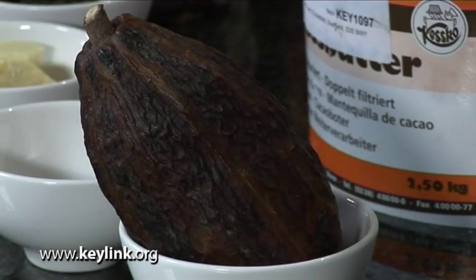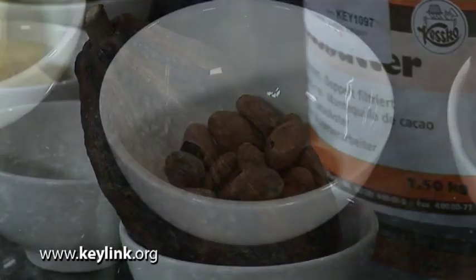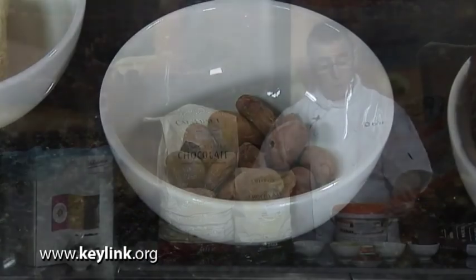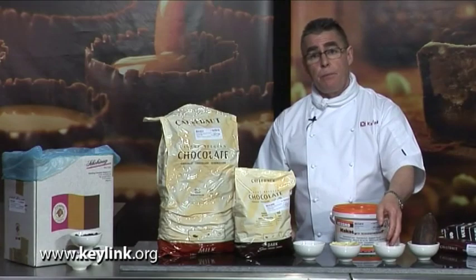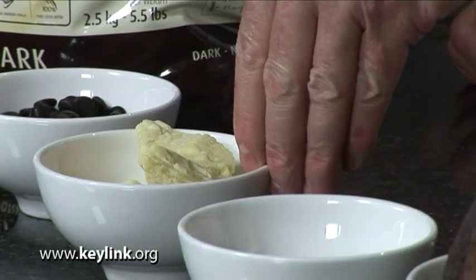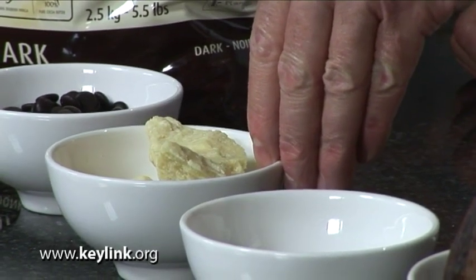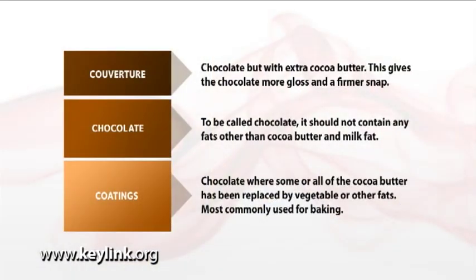What I'm going to do now is talk about chocolate and where it comes from and give you a much better insight when choosing the product. This is a cocoa pod. Within the cocoa pod we get the cocoa bean. Once the cocoa bean has been processed we finish up with cocoa mass and cocoa butter. The type and quantity of the cocoa butter is the main factor that determines the quality of the chocolate.